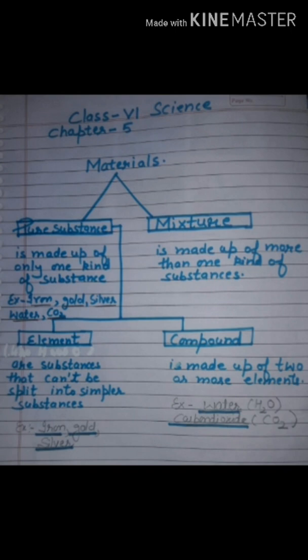Out of all these materials, some are pure substances and some are mixtures. Pure substances are substances made up of only one kind of substance — they consist of one type of particle. A pure substance can be an element or a compound. Examples of pure substances are iron, gold, silver, water, and carbon dioxide. Iron, gold, and silver are elements — they cannot be split or broken down into simpler substances. Whereas water and carbon dioxide are compounds, because a compound is made up of 2 or more elements.